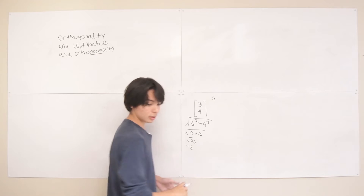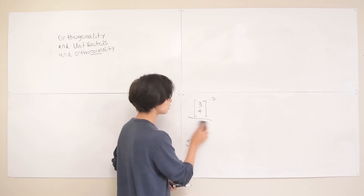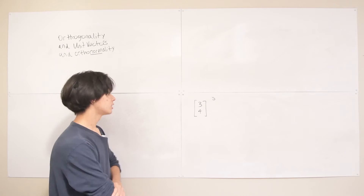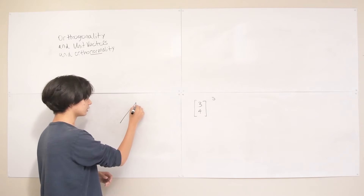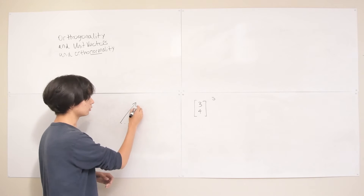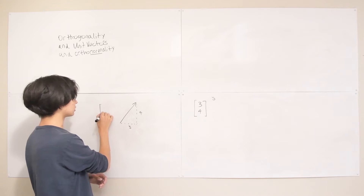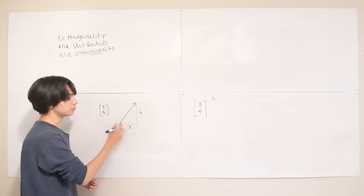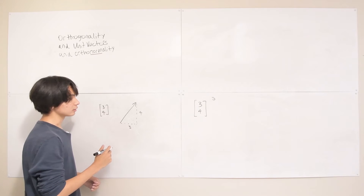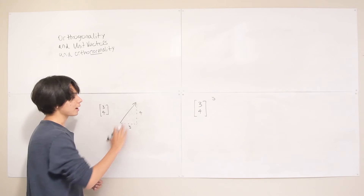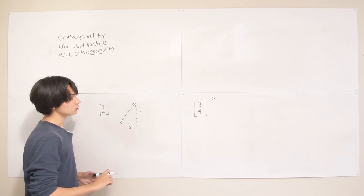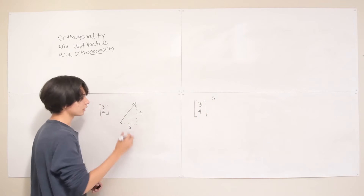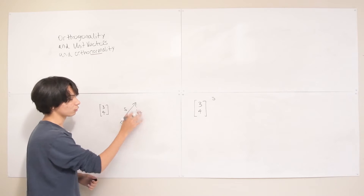We can understand this geometrically using the Pythagorean theorem. If we have a vector with x-component 3 and y-component 4, it traces out a right triangle in the Cartesian plane. The hypotenuse of this right triangle is the magnitude of the vector — so the length of this vector is 5, creating a 3-4-5 triangle.